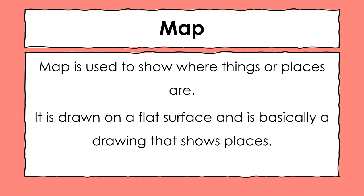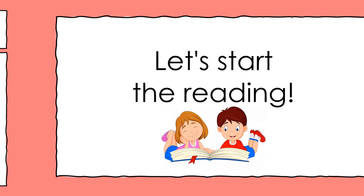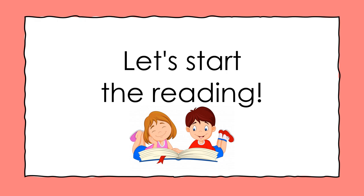A map is used to show where things or places are. It is drawn on a flat surface and is basically a drawing that shows places — just like in Dora the Explorer, where Dora takes the map on her adventures and it helps her find different places. Here is a map of Pakistan showing the provinces: we can see Punjab, Sindh, Balochistan, KPK, and along with that FATA and Gilgit Baltistan. I hope you have all learned about directions, cardinal directions, compass, and map.